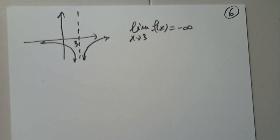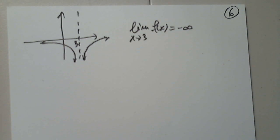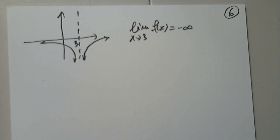Do not confuse the operator called evaluate with the operator called limit. The limit from the left is three. The limit from the right is one. Do we all agree with that?